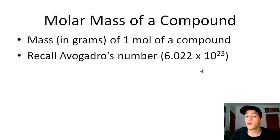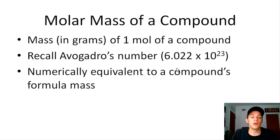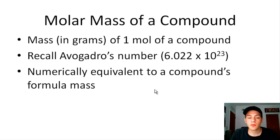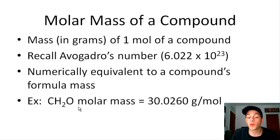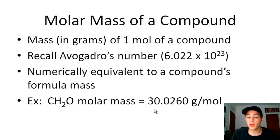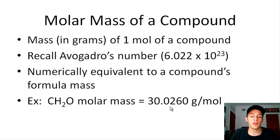If I have a mole of formaldehyde, that's 6.022 × 10²³ formaldehyde molecules. The molar mass is numerically equivalent to the corresponding compound's formula mass in AMU. Since the formula mass of formaldehyde is 30.0260 AMU, the average formaldehyde molecule has a mass of 30.0260 AMU, and the molar mass of formaldehyde — the mass of one mole, or 6.022 × 10²³ molecules — is 30.0260 grams per mole.